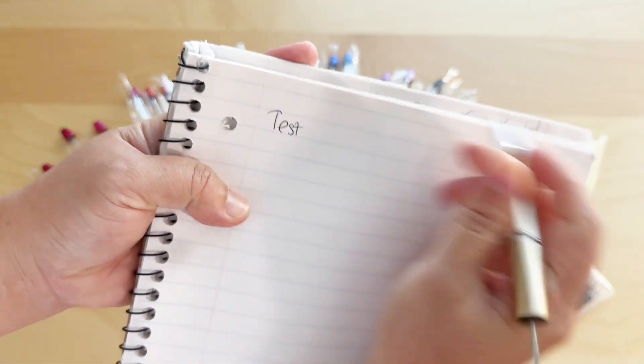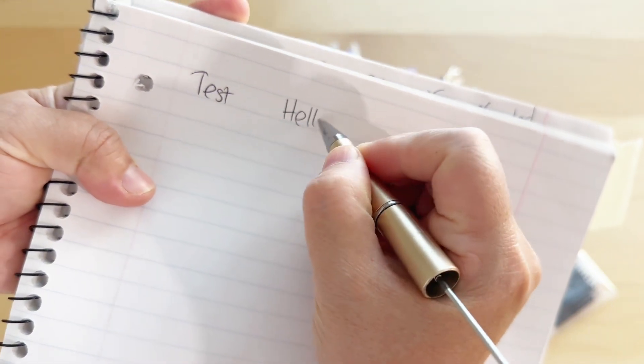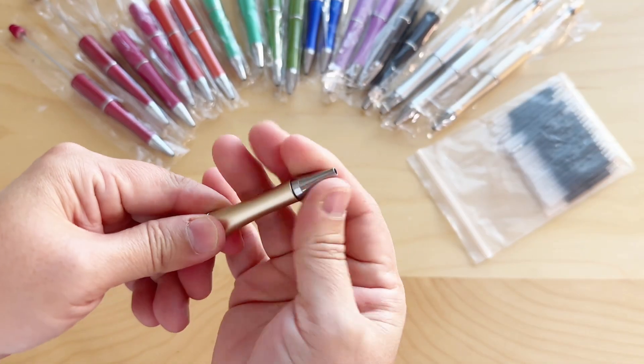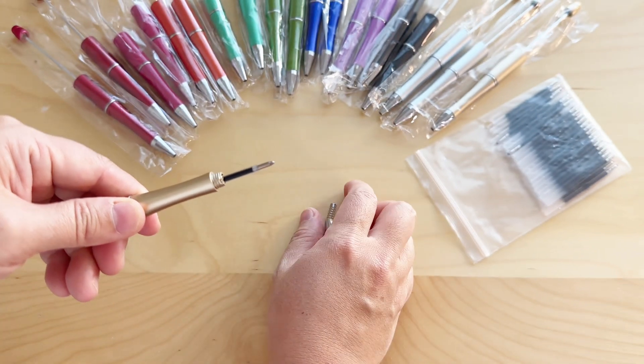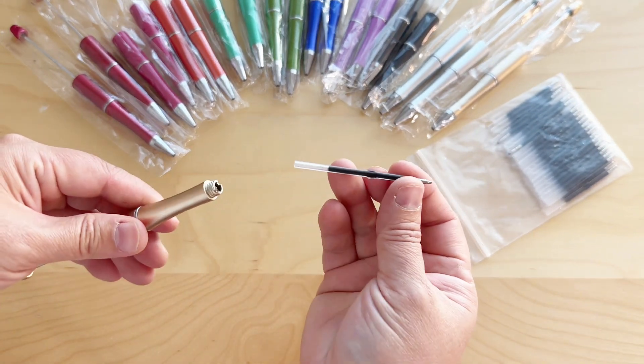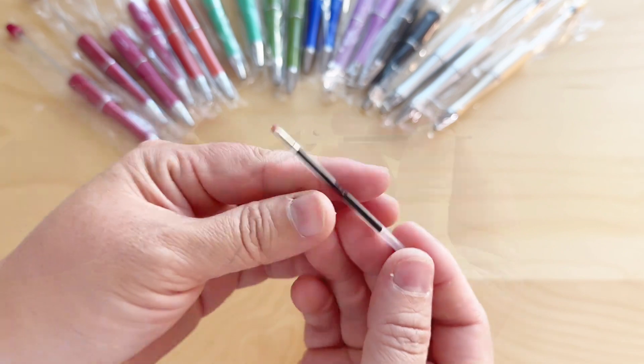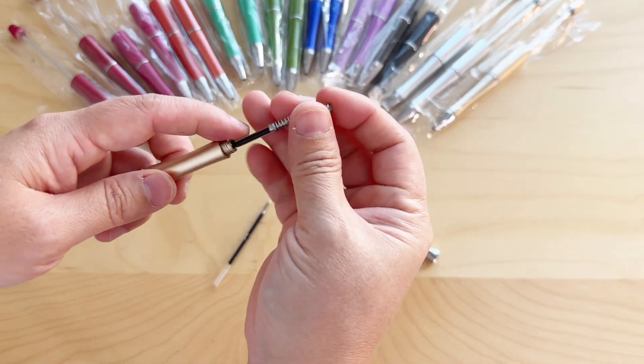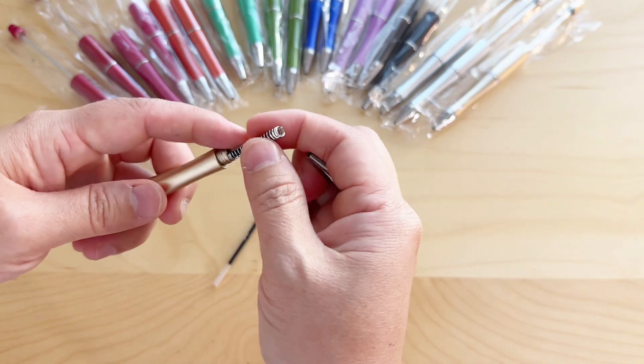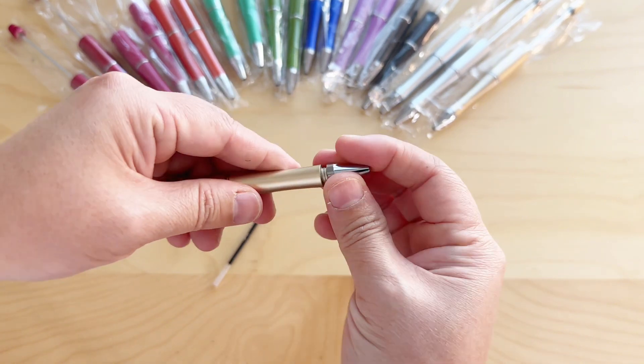They provide extra black ink refills. To change the refill, you unscrew the top of the pen, remove the spring and ink, replace it with a new one, and put everything back in place. It's a very simple process. They provide 40 refills, which is plenty for this set of 20 pens.